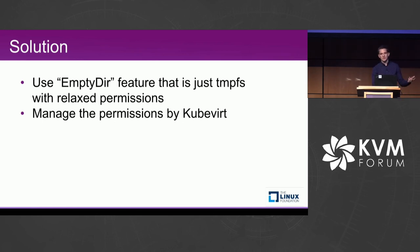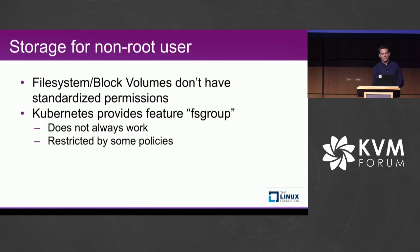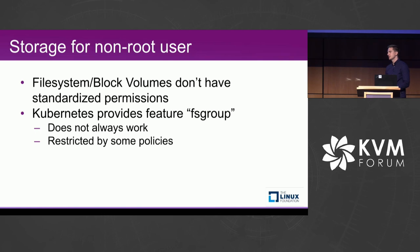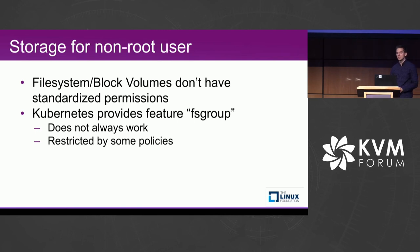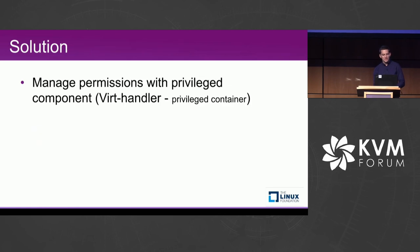This solves the burden of vendors keeping track of the filesystem structure they need to expose to the user. For storage, Kubernetes allows file and block volumes, which don't have a standard permissions model — running as non-root often results in permission denied. There is a Kubernetes feature called fsGroup that ensures files and directories are in a special group that the user belongs to. However, it doesn't work well with all storage providers and is restricted by some policies, so we can't use it. The solution is again to manage permissions inside the privileged virt-handler component.